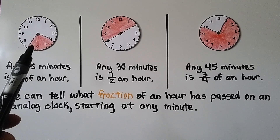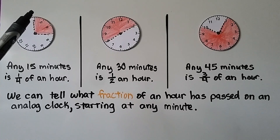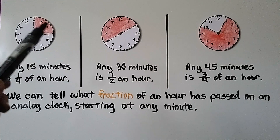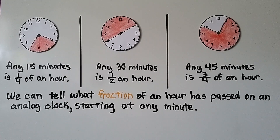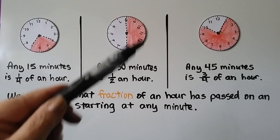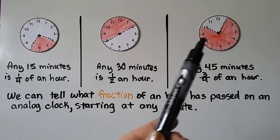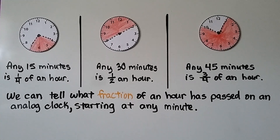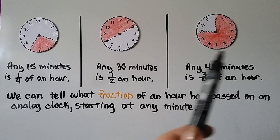Five, ten, fifteen minutes — that is one-fourth of an hour. If it's hard to tell what fraction it is, we can turn our paper or book so that the four is on top where the twelve was, and we can see that this is one-fourth. Any thirty minutes is a half an hour, no matter where it starts — we could turn the clock so the eight is on top and easily see that's half the hour. And any forty-five minutes is three-fourths of an hour; if we turn it so the one is on top, we can see it's three-fourths.